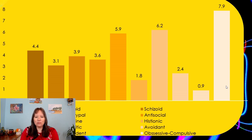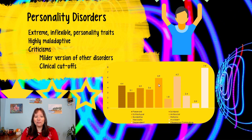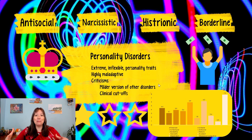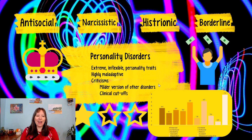Instead of talking about those six, we're going to talk about the four in the middle: antisocial, borderline, histrionic, and narcissistic. These four don't seem to be milder versions, and they tend to be the ones getting the most emphasis and are the least controversial at this point in time.